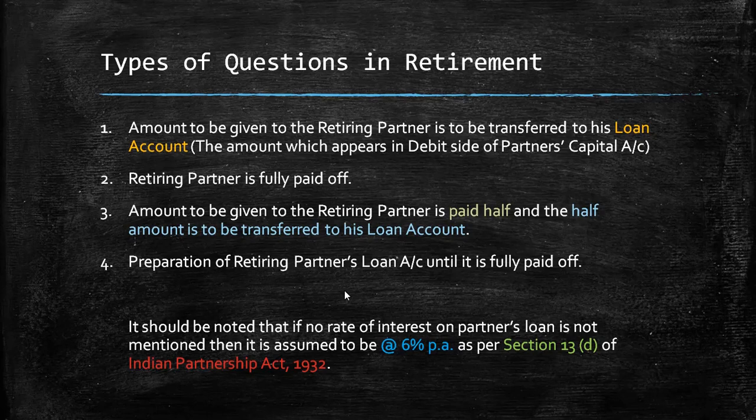If installments are half-yearly or quarterly, you need to adjust the rate of interest accordingly, because normally rates are given for the full year. For example, whether the rate is 6%, 8%, or 10% will be mentioned in the question. If installments are half-yearly or quarterly, you need to make some adjustment with the rate. We will see this when we have the numericals. There are four types of questions in retirement we will solve with numericals.